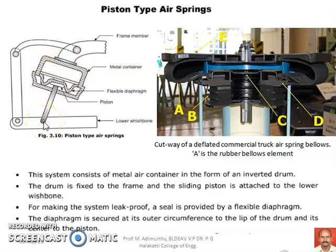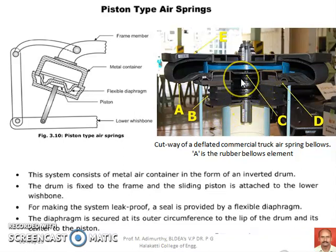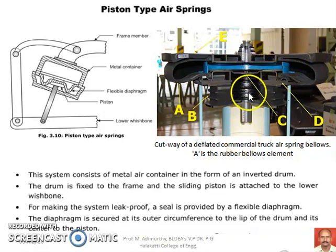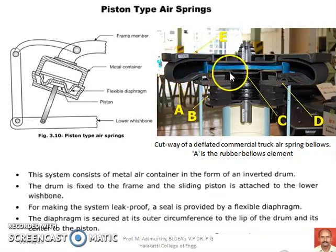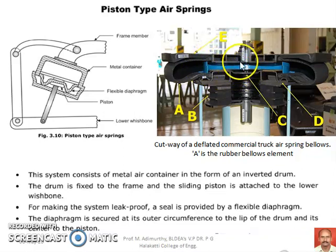During debouncing, the piston moves in the downward direction and the air expands. Gradually the lower wishbone arm moves down and the length of the arrangement returns to normal. The cut section of this arrangement is shown here. The flexible diaphragm, piston, piston rod, and metal container are visible. The entire bellow-type arrangement is connected to the flexible diaphragm. When the piston moves up, the diaphragm also moves up, squeezing the available space and providing stiffness.